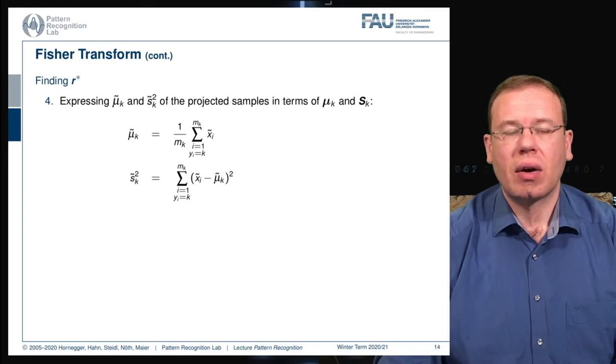How can we then find R*? R* is essentially used to compute our x̃ and with x̃ we can then also find our μ̃ and S_K̃. Let's start looking into μ. You see here that this is essentially using R as an inner product, and if we know this is an inner product, we can see that R is constant over the entire term so we can compute the mean over the respective class and pull out the R transpose.